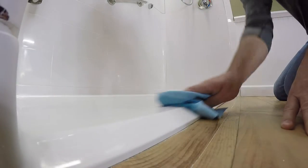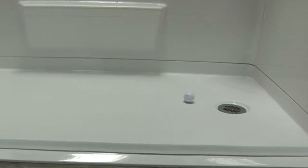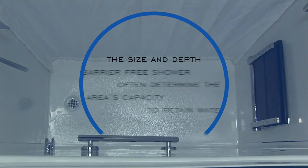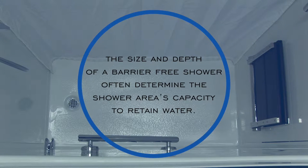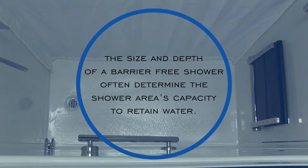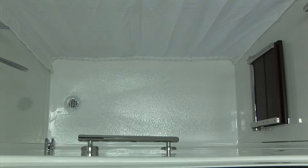In smaller spaces, all barrier-free showers are by definition curbless with a gentle slope to the drain. The size and depth of a barrier-free shower often determine the shower area's capacity to retain water. Collapsible dams are particularly well suited for bathtub replacement size showers.